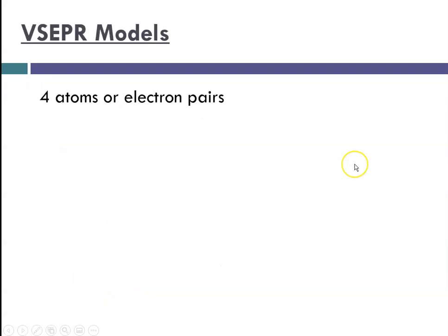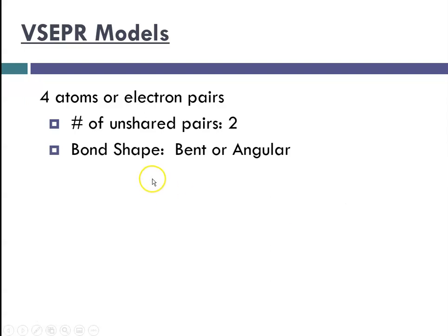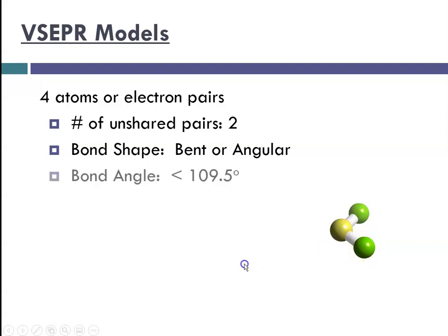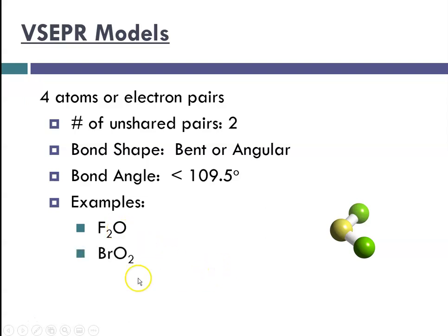If you have four atoms or electron pairs with two unshared pairs, the bond shape would be bent or angular. The bond angle is less than 109.5 degrees. Examples would be difluoroxide, bromine dioxide, and sulfur dichloride.